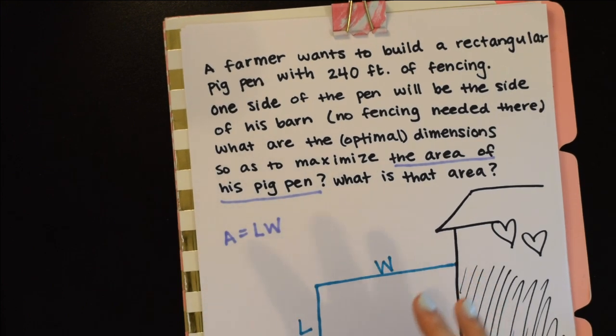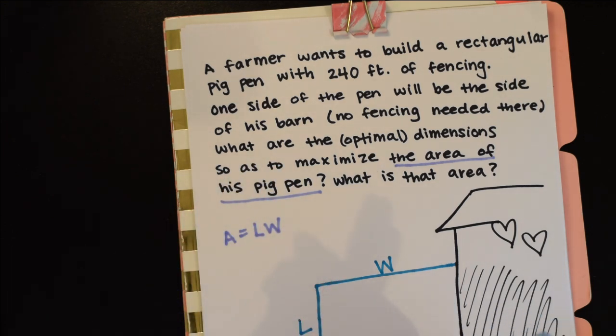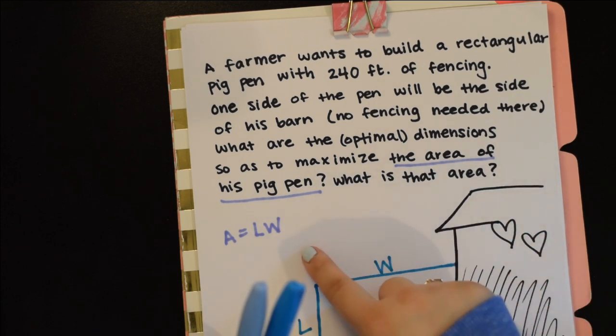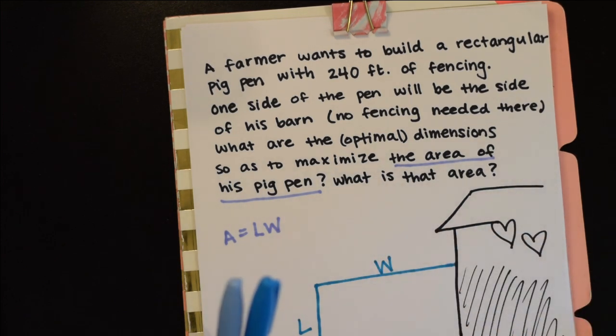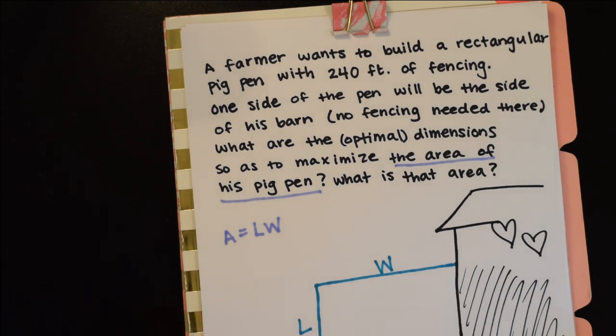The area of this is going to be length times width. Step one: write the thing that you're trying to optimize. Step two is try and eliminate one of these variables or make everything in terms of one variable given your constraint or something else that's given.